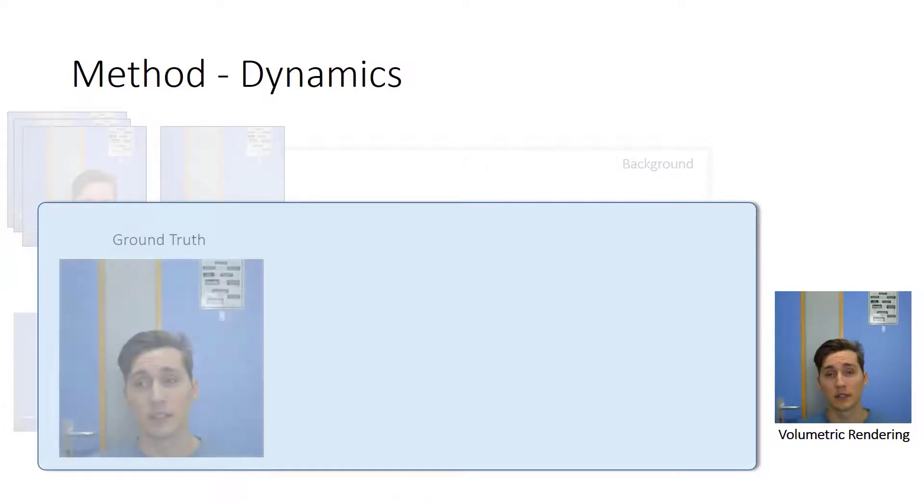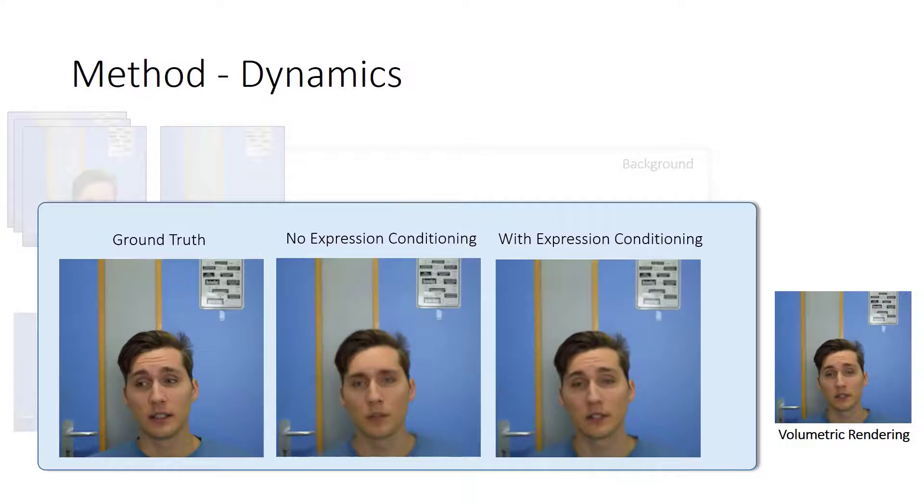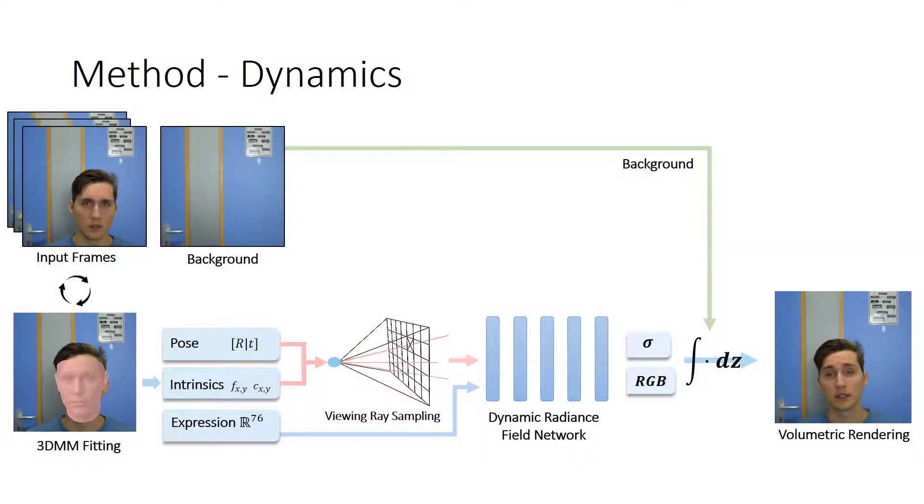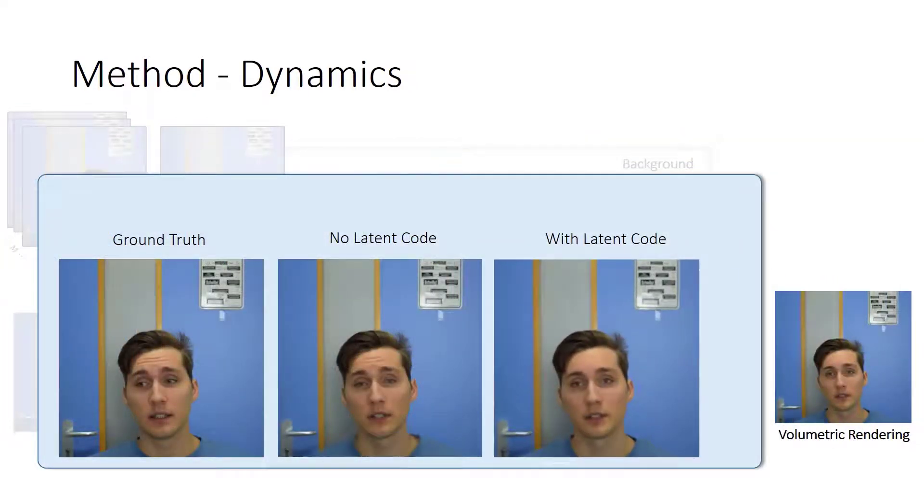While the rigid head pose and the expression vector account for most of the dynamics in the scene, some parts, such as the shoulder articulation or tracking errors, remain unparameterized. To address this, we introduce a learnable latent code for each frame in the training set. At test time, we feed in the latent code of the first training frame. The latent codes enable higher perceptual quality and sharper images.